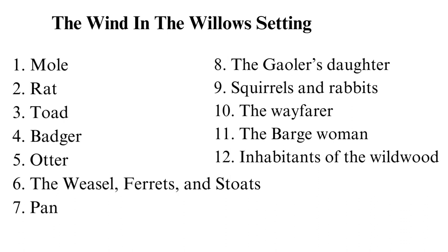The Weasels, Ferrets, and Stoats, led by Weasel, are the antagonists who want to take over Toad Hall. Pan is a gentle god who lives in the wild and cares for Portly when he is lost. The Jailer's Daughter is the only human character and helps Toad escape from prison.